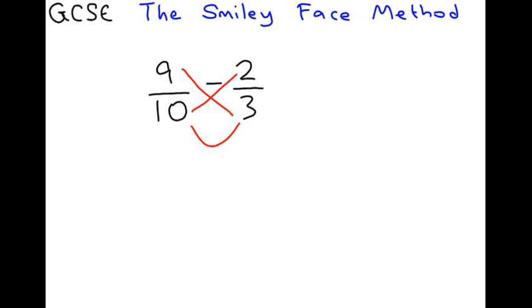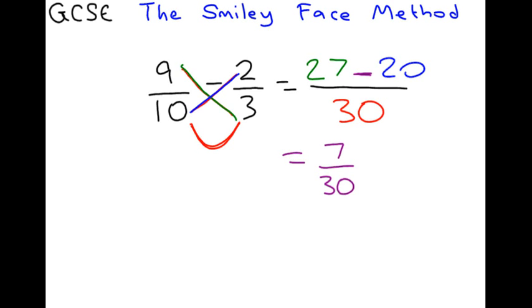There it is. And we think, okay, first one is going to be 9 times 3. 9 times by 3 is 27. The next one is going to be 10 times 2. 10 times 2 is 20. And the smile is going to be 10 times 3, which is 30. Now, this is the important bit. We look at what sign we had. Can you see it was a take away? So, we use a take away. 27 take away 20 is 7. So, your answer is 7 over 30. So, that's how you do a take away.